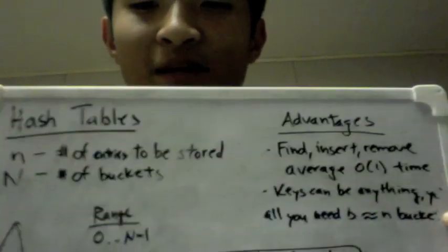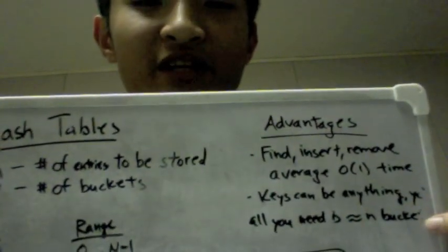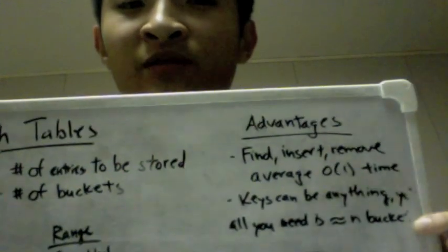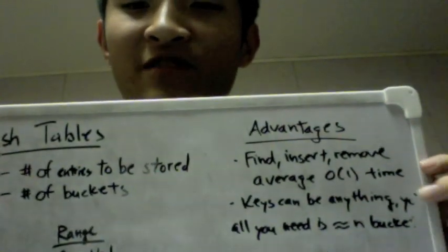But the advantage of hash tables over arrays is that the keys can be anything. And all you need is about n buckets, which is the number of items that you're going to be storing. So you can see that hash tables have an advantage over both of them.